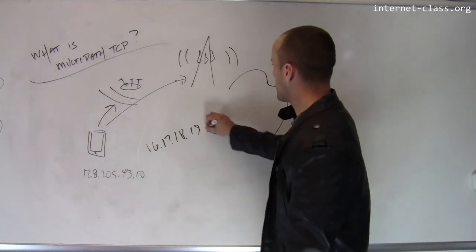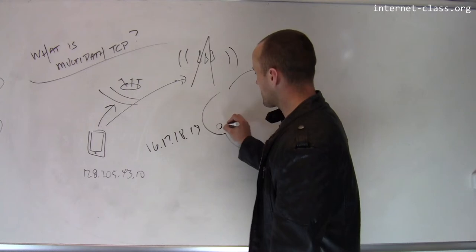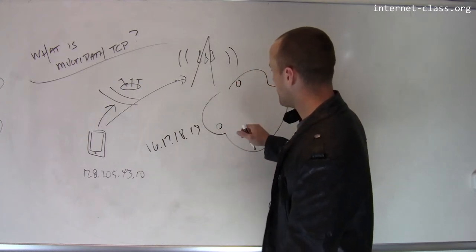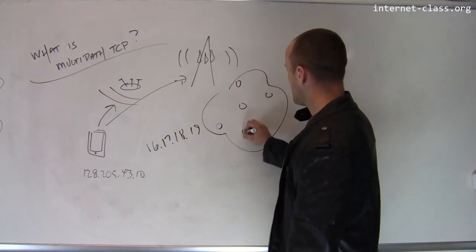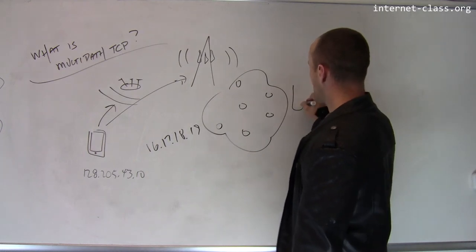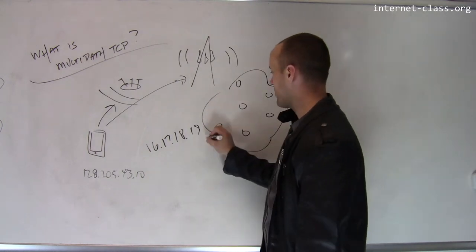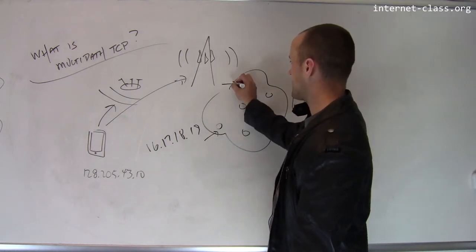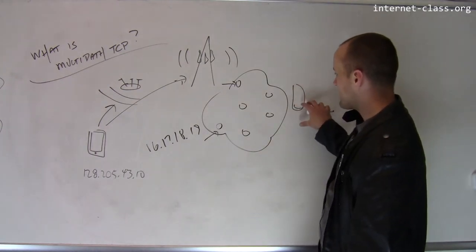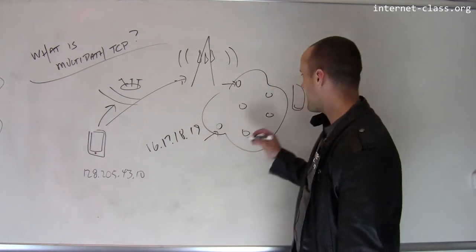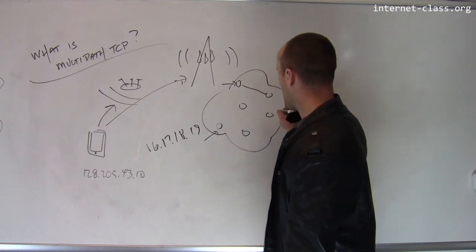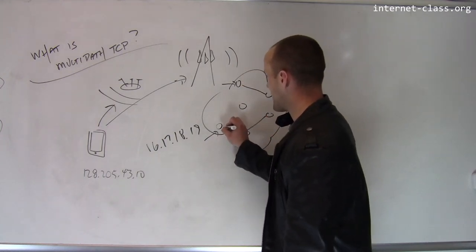And so what happens actually within the core of the internet is your computer, your phone actually has two different entry points to the internet. So one of them is here, maybe that's your UB connection, the other one's here, that's your LTE connection. And data that's being streamed back from the server in this case is actually following multiple different routes back to you.